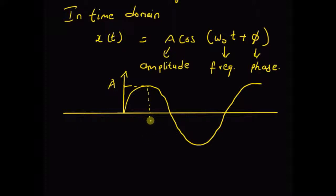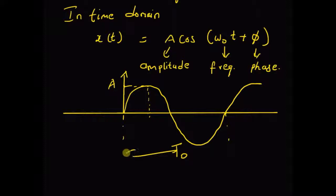The frequency omega-naught is related to the time period T-naught — that is, the distance from one zero crossing to the next, which is the time period T-naught. So the frequency omega-naught is related to this time period as two pi divided by T-naught.